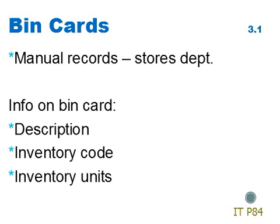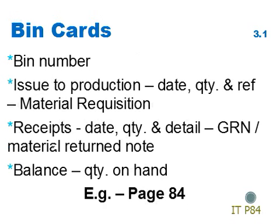The following is information that is usually found on a bin card. Description of the inventory item. Inventory code, so that the item can be easily identified and updated to the computerized records. Inventory units — how the inventory item is measured, for example, kilograms, boxes, or meters. Bin number — the location of the item in the store. Issue to production: the date, quantity, and the reference number of the material requisition,